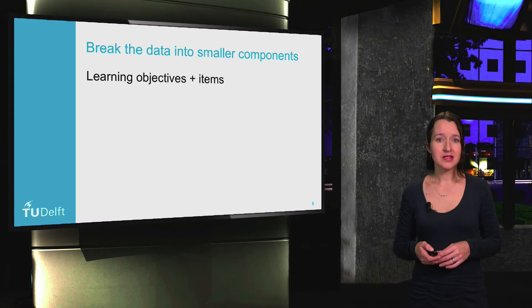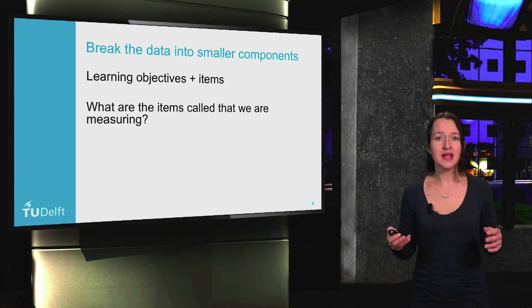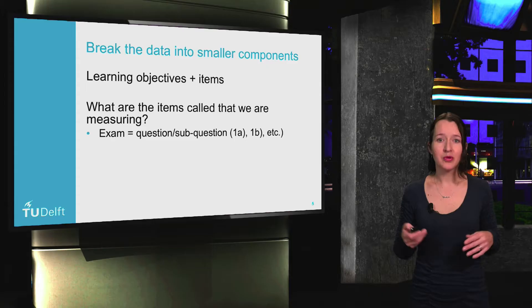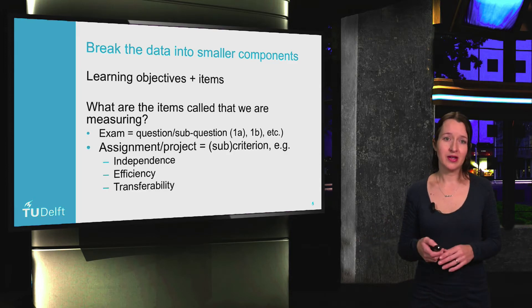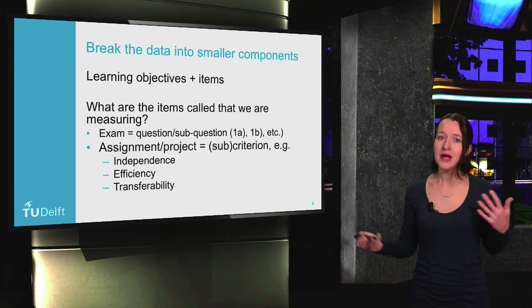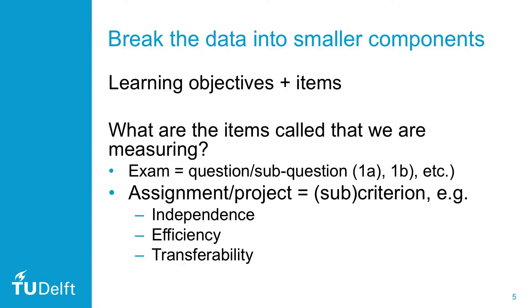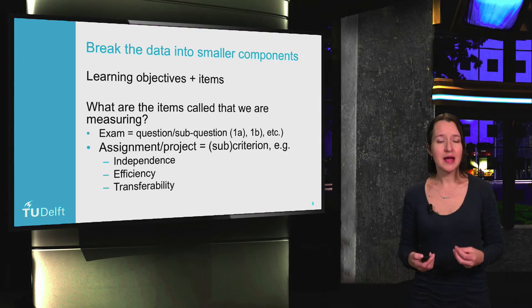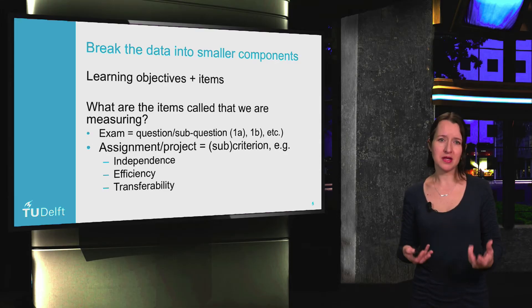It's therefore important to analyze that all learning objectives are being examined properly. We do this by breaking exams or assignments into individual components. For exams, these are the questions or sub-questions. For assignments or projects, they are the criteria or sub-criteria — things like independence or writing style. Please keep this differentiation in mind, because we're going to use a different approach for exams and assignments, as the items that elicit a response from the student differ between these two types.